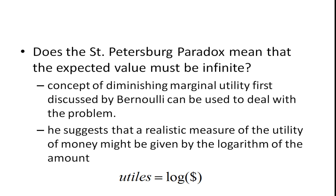The concept of diminishing marginal utility, first discussed by Bernoulli, can be used to deal with this problem. The expected value can be infinite, but Bernoulli uses diminishing marginal utility. From economics, diminishing marginal utility says that as you get more and more of something, you get less and less extra satisfaction — less extra utility — from consuming it or getting it.